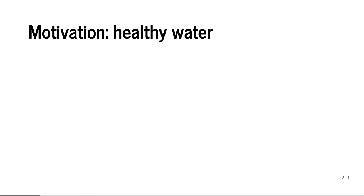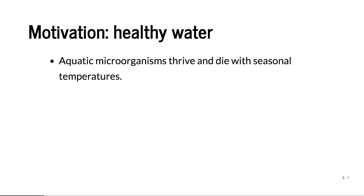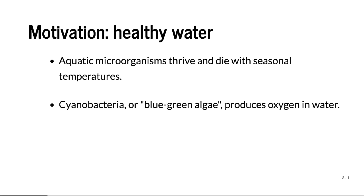Since I work at CSIRO, we have to have a little bit of science. The motivation for this talk is we want to make sure we have healthy water. There are aquatic microorganisms called cyanobacteria — commonly blue-green algae — that thrive and die with seasonal temperatures. They produce oxygen in water and are the only organisms in this category that can do so. So they're the reason why fish can breathe in natural lakes or rivers, and having a good number of them is very important to our ecosystem.